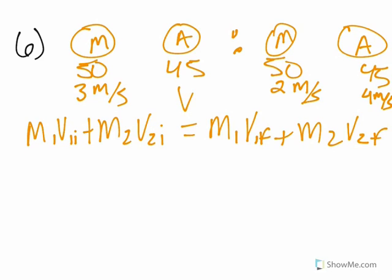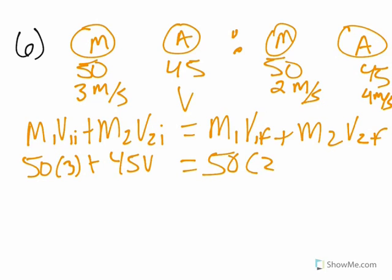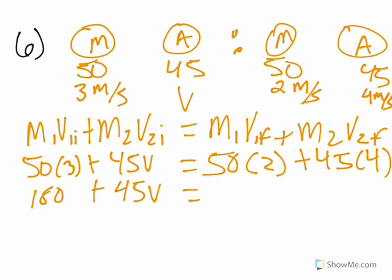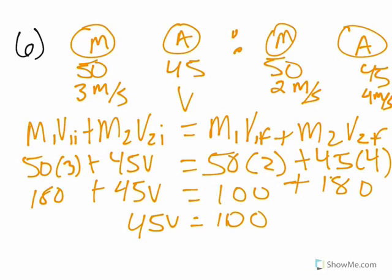We fill in the blanks: 50 times 3 plus 45 times V equals 50 times 2 plus 45 times 4. That gives 150 plus 45V equals 100 plus 180, so 45V equals 130. Dividing 130 by 45 gives V equal to 2.89 meters per second.